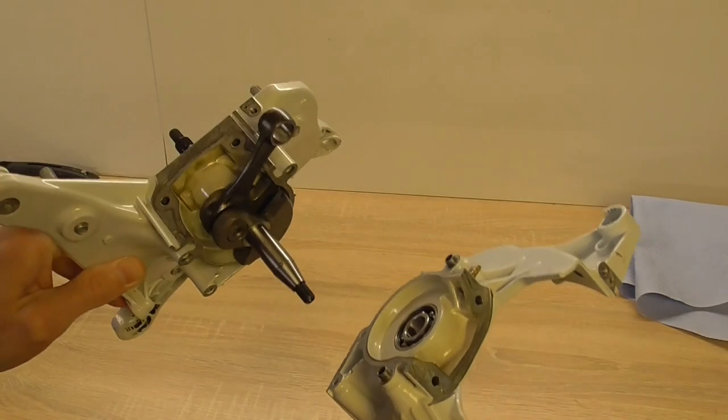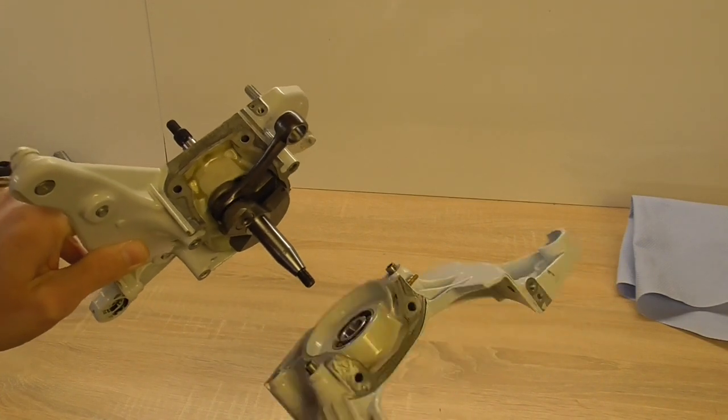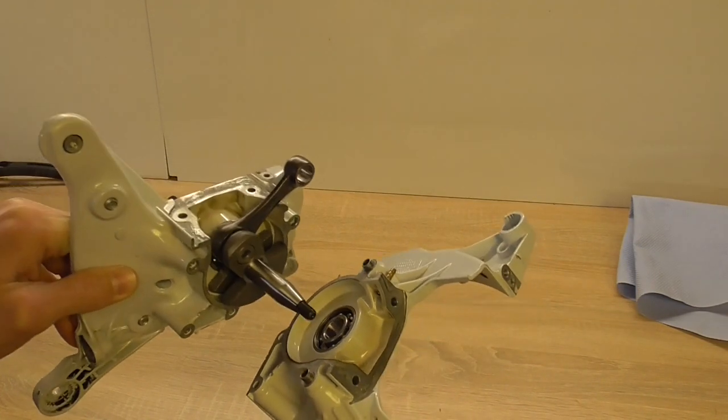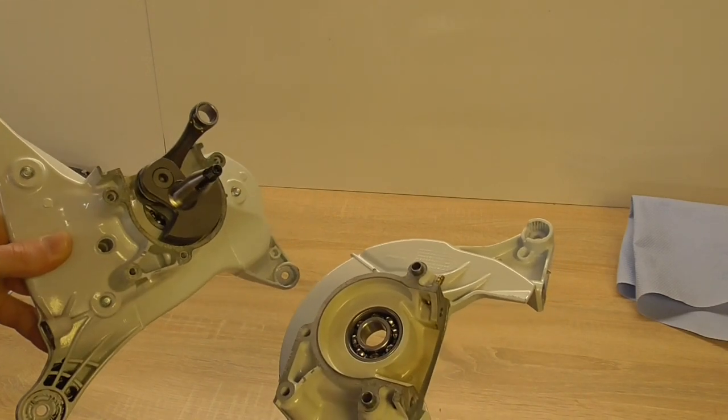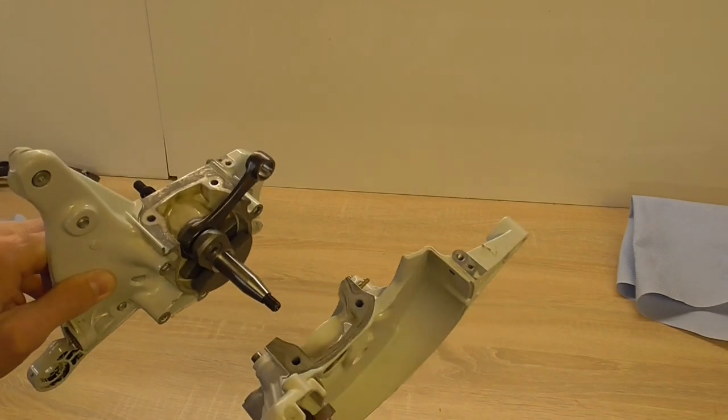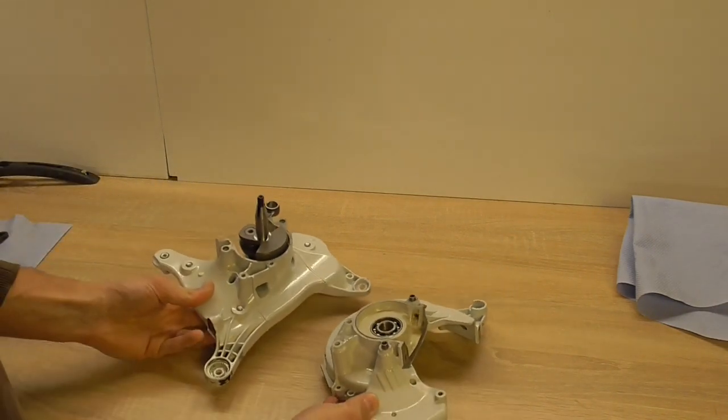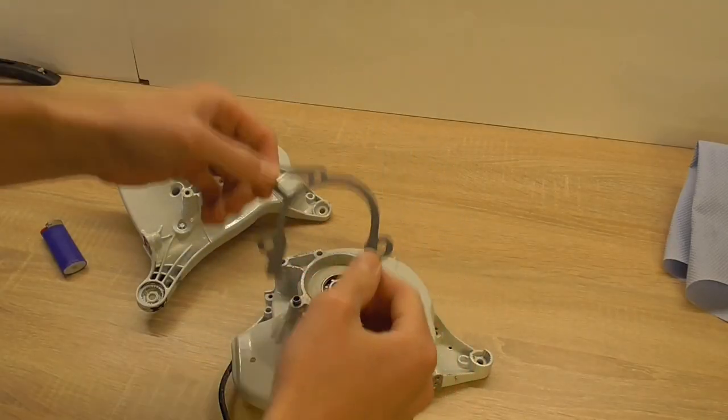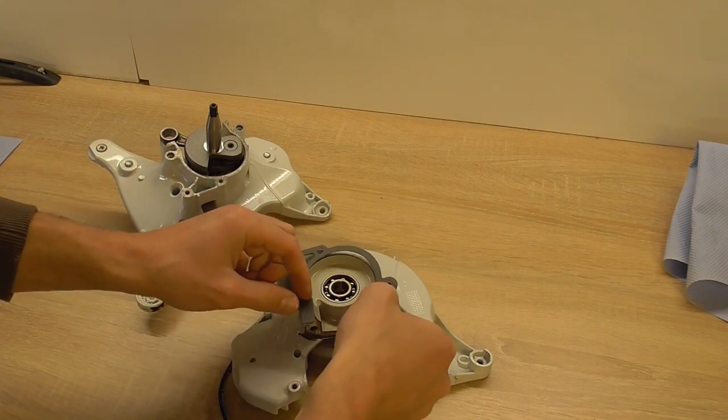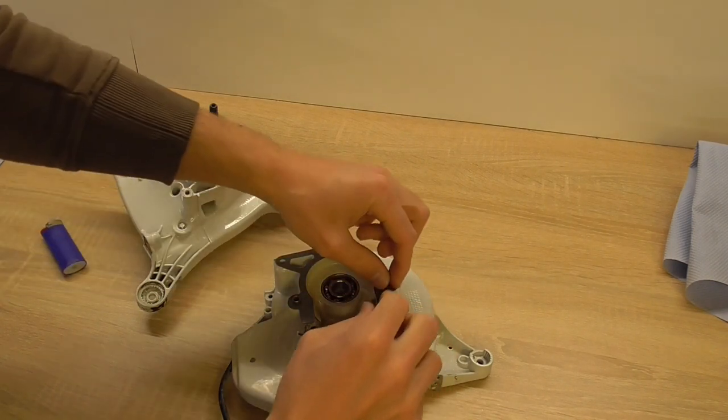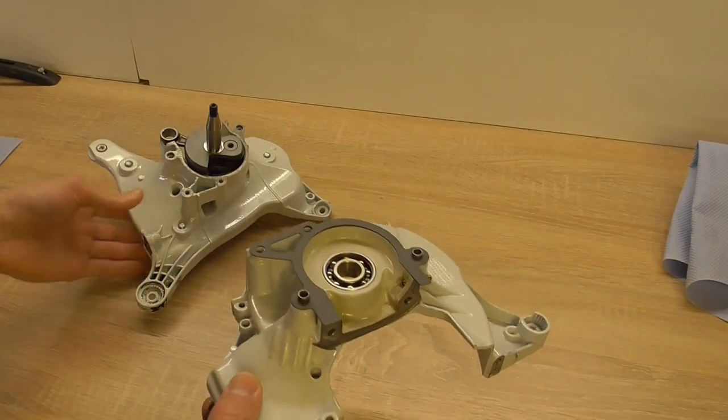The next difficult step is to get these two engine cases together. And to make it easier, I'm gonna heat up the inner ring of the right bearing and it should just get together easily. Don't forget this one. Otherwise, really bad. I hope this goes easy.